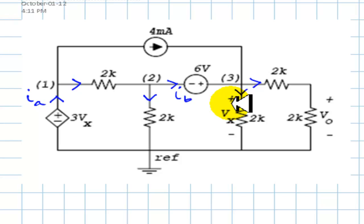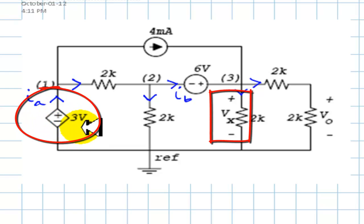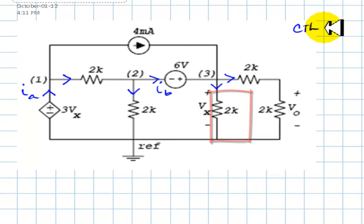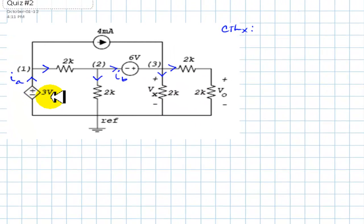First equation, controlling equations. Is there any controlling variable here? Well, there is only one control source, this one. Vx is a controlling variable, so it deserves a CTL equation. Who is the controlling variable? Vx. So, Vx has to be equal to something. Vx is defined here. It says Vx is in reality V3 minus V of the reference. V3 minus 0, and that is your first equation.